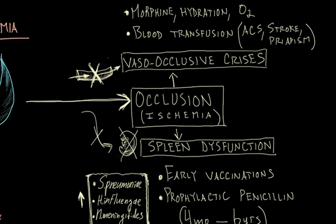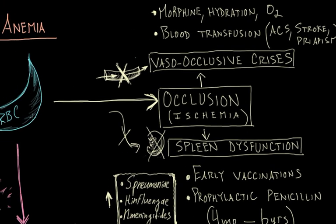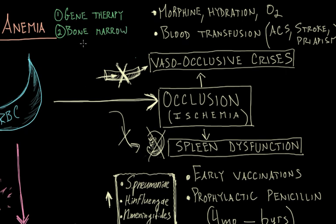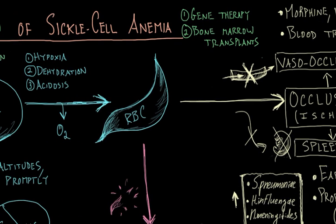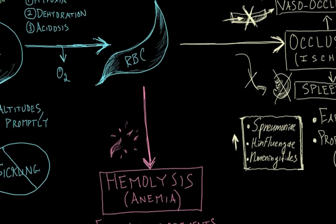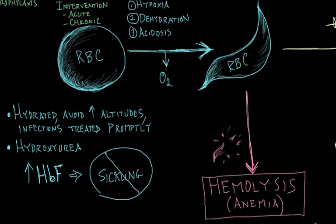This is how you manage the disease. Finally, in terms of cure, there are a couple of things on the horizon: one is gene therapy, and the other is bone marrow transplants. This is more of the curative aspect of management — everything else is just dealing with the situation at hand, either in an acute setting, chronic setting, or preventing the disease process.